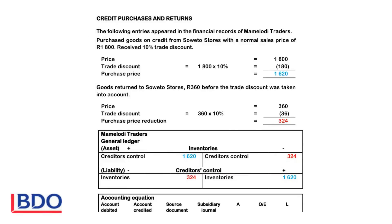Good morning. We will pay attention to credit purchases and returns to creditors. We purchase goods on credit from Soweto stores with a normal sales price of $1,800, and then we receive a trade discount of 10%. Suppliers encourage people to buy in bulk and give them a trade discount so you pay less. So instead of paying $1,800, we receive 10% discount, and our actual purchase price is $1,620.